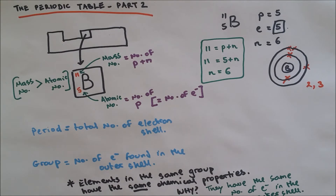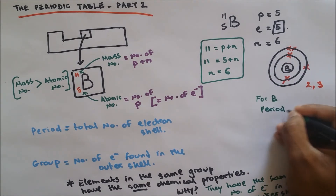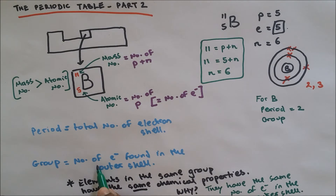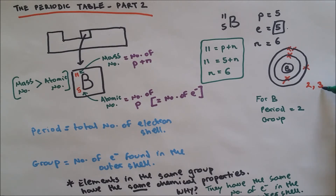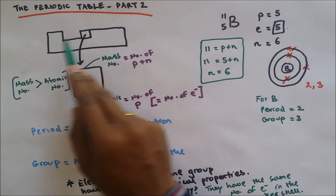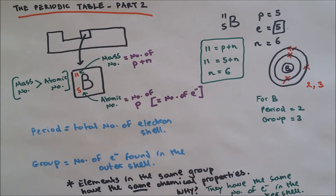The electron arrangement is 2, 3. The period is the total number of electron shells — in this case we have 2 shells, so boron is in period 2. The group is the number of electrons in the outer shell, which is 3, so boron is in group 3. Hydrogen, helium, lithium, beryllium, boron — boron is in group 3. Thank you for watching. I'll be doing a test on the second part of the periodic table — please try it, subscribe, and share with your friends!